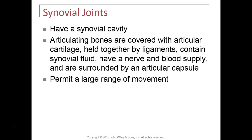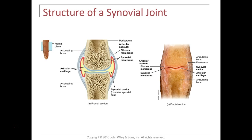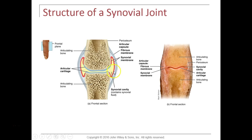For that reason, synovial joints are considered to be diarthroses. Here's a diagram and a cadaver picture of an interphalangeal joint of a finger. The adjoining bones are separated by the synovial cavity filled with synovial fluid. The ends of the bones have articular cartilage — hyaline cartilage — surrounded by an articular capsule, which is a dense fibrous capsule on the outside. Lining the inside of the capsule is the synovial membrane, containing special cells called synoviocytes that produce the synovial fluid.